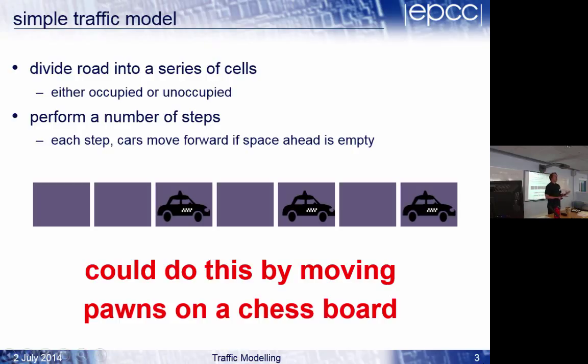So you could do this by moving pawns on a chessboard. This is a very simple example of a cellular automaton. The more commonly known one is the 2D Conway's Game of Life. Way back when I was young and computers weren't invented, me and my brother used to do the Game of Life on the chessboard with half-pence pieces. So you could have a chessboard which is your road, and you could have pawns on it, and you could move them along.